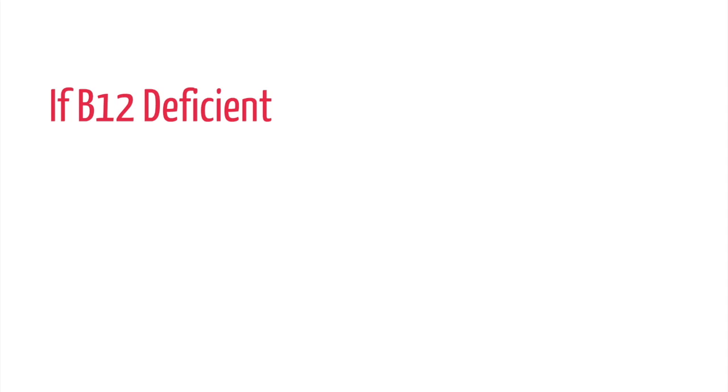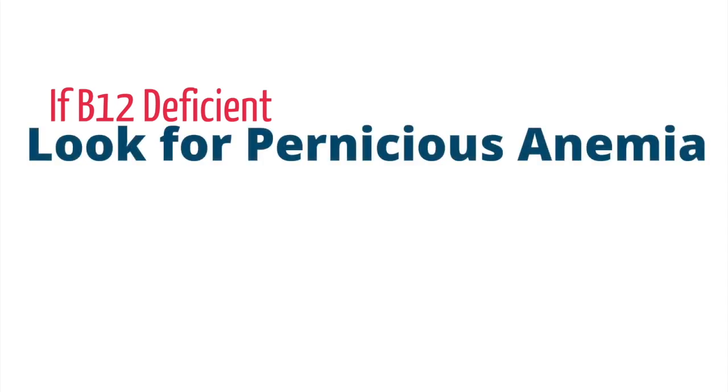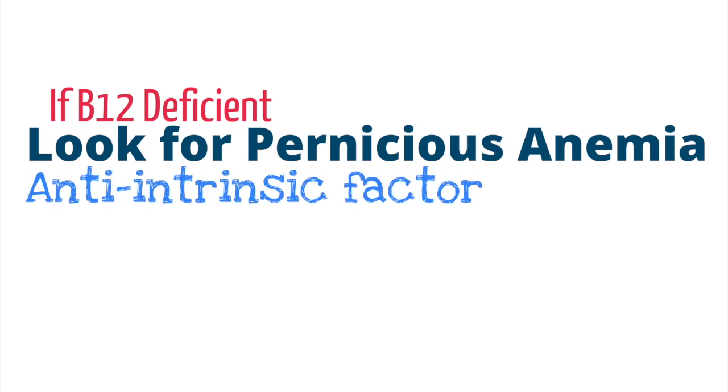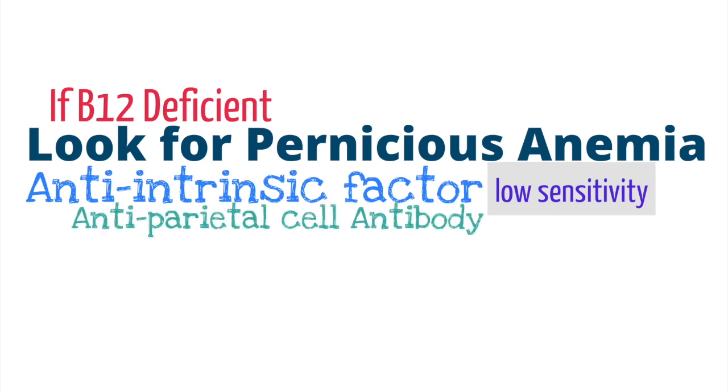If B12 deficiency is diagnosed and no other cause is suspected, it is important to consider pernicious anemia. Typically, pernicious anemia can be tested for by obtaining an anti-intrinsic factor. Anti-intrinsic factor has low sensitivity, but when found, points to pernicious anemia in the correct clinical setting. Some people order anti-parietal cell antibodies, but this has poor sensitivity and is not diagnostic for pernicious anemia. Many times, an elevation in anti-parietal cell antibody can be seen in other causes of gastritis or gastric inflammation, making it a poor test.